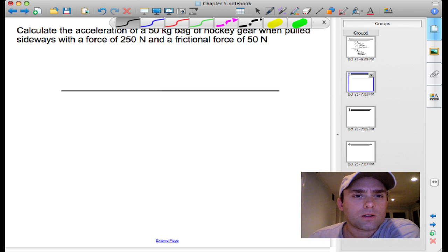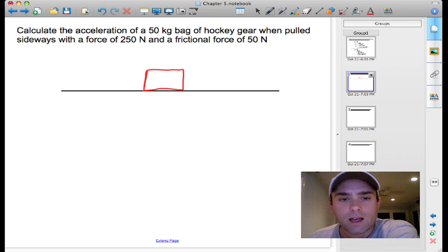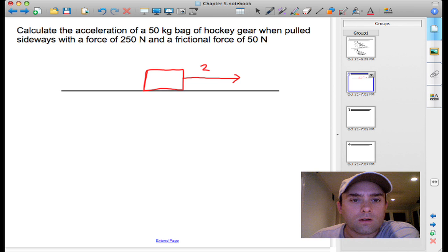We're saying a hockey bag is what it is, so we can represent that by a box. On here it says that it's pulled sideways. You can choose either side, it doesn't make a difference, so we'll say that it's being dragged to the right. The force that's dragging it to the right is 250 Newtons.